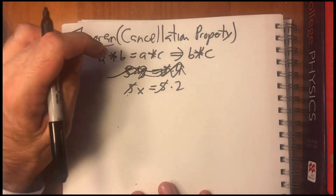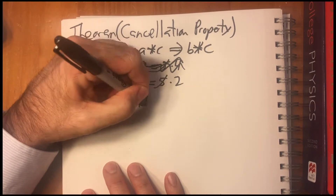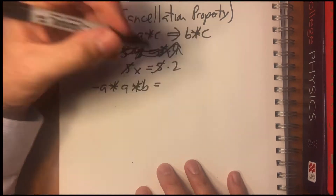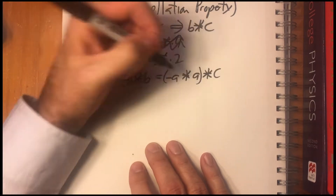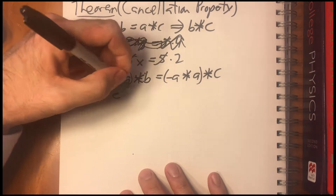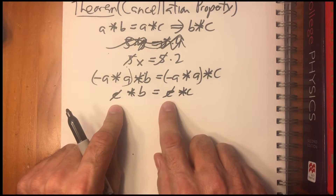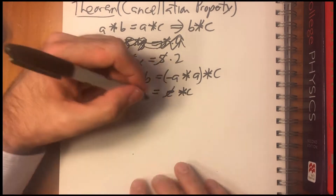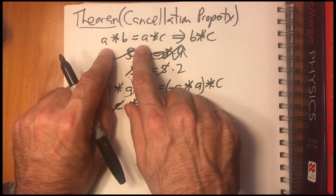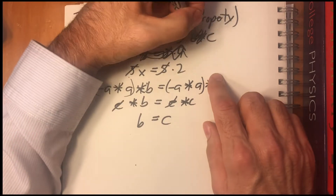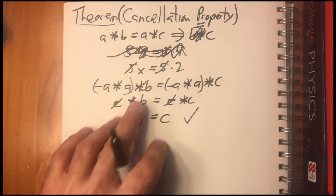To prove this, we can just multiply both sides by the inverse of A. We have minus A, then A times B, and we apply associativity. Minus A times A equals E — those cancel using the inverse property. That's the identity: E times B equals B, and E times C equals C. So we have that B equals C, which is what we wanted to prove — that if A times B equals A times C, then B equals C. Notice we're never using the commutative property; it's not necessary for these results.